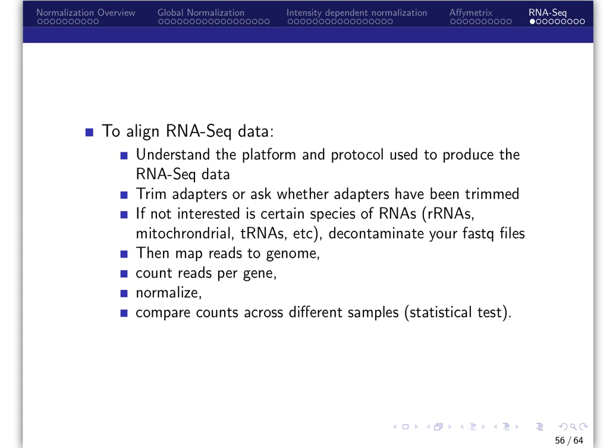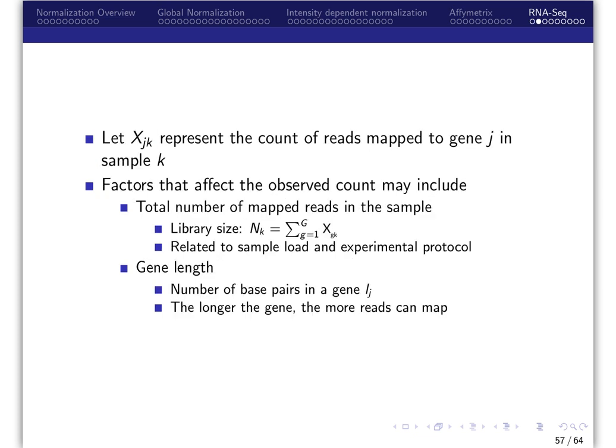Regardless, you'll get a data matrix. For RNA sequencing data, let X sub JK represent the unnormalized count of reads mapped to gene J in sample K. The total number of mapped reads in the sample is the library size. This is related to the amount of sample loaded and the experimental protocol.